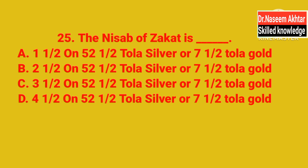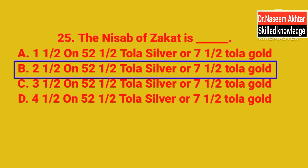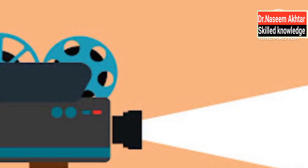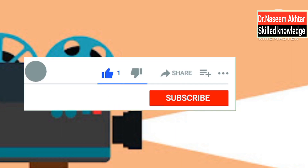MCQ 25: The nisab of Zakat is — A. 1.5%, B. 2.5%, C. 3.5%, D. 4.5%. Zakat ساڑھے 52 طولے چاندی اور ساڑھے سات طولے سونے پر فرض ہے اور اس پر ڈھائی فیصد بنتا ہے۔ The correct answer is B — 2.5%. If you liked this video, please like and share it and must learn these MCQs for your test.